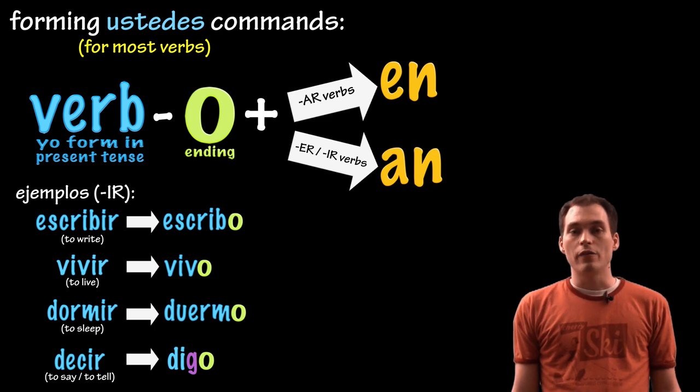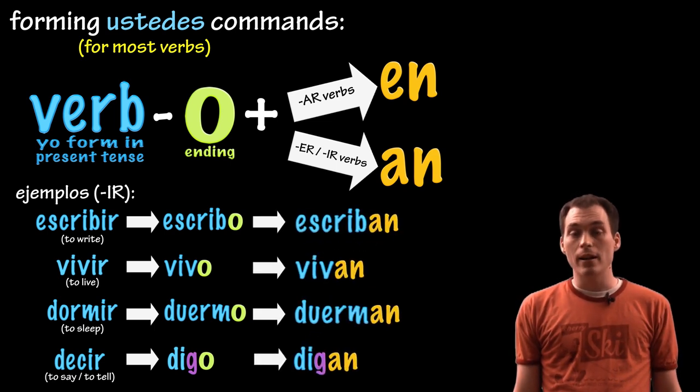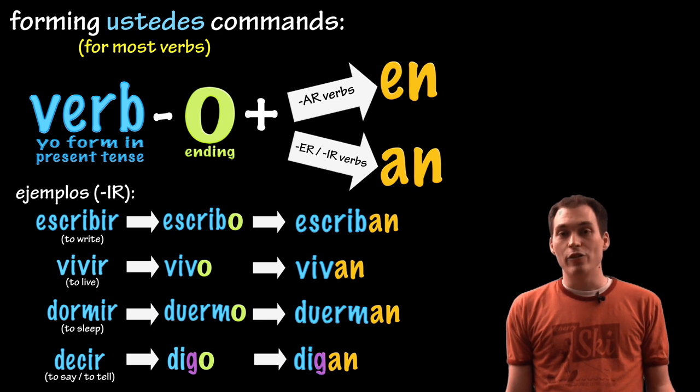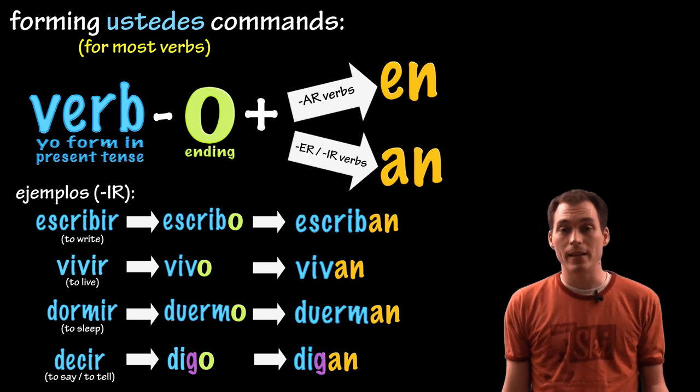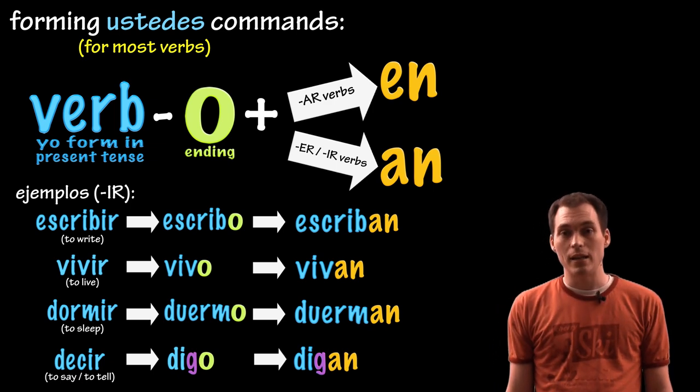And take off the O and add AN, escriban, vivan, duerman, and digan. Again, notice the spelling changes for dormir, changes to duermo, and decir changes to digo, and so we're going to keep that spelling change in the ustedes command.